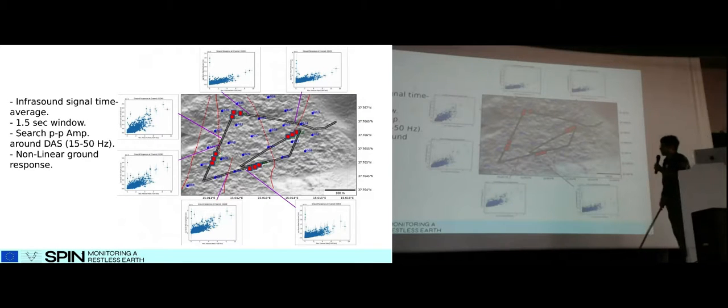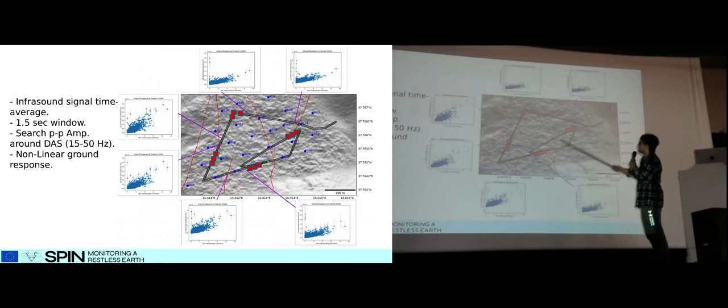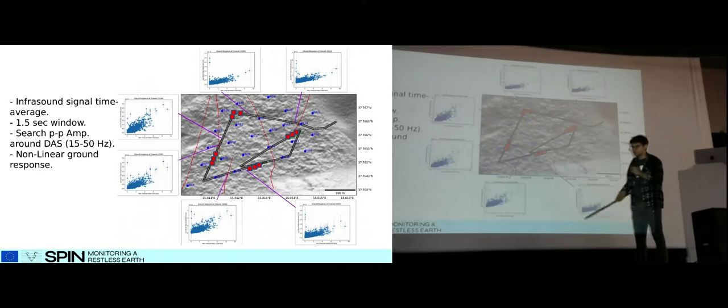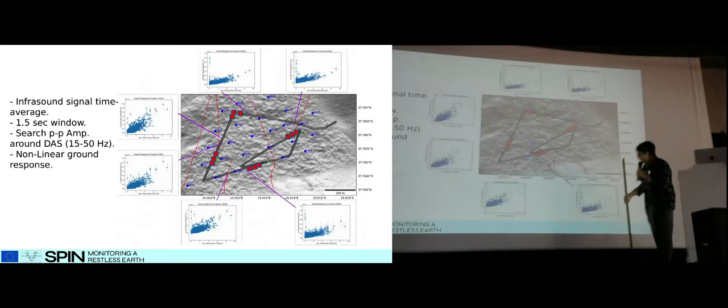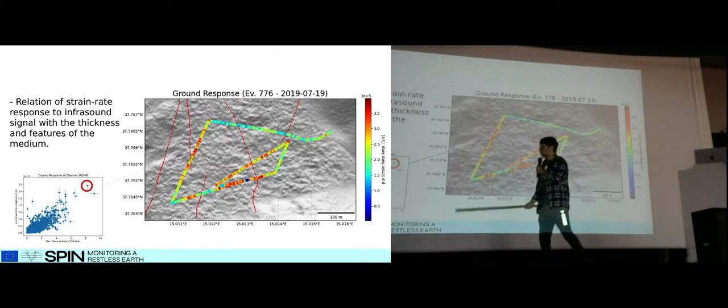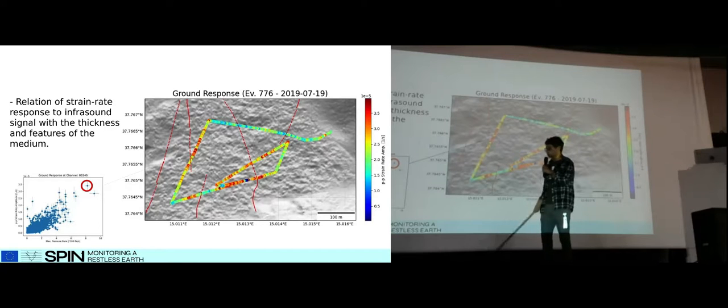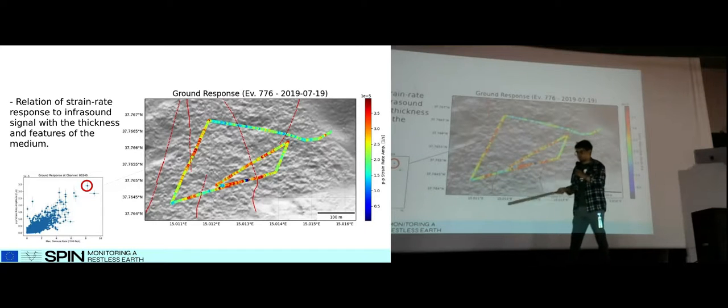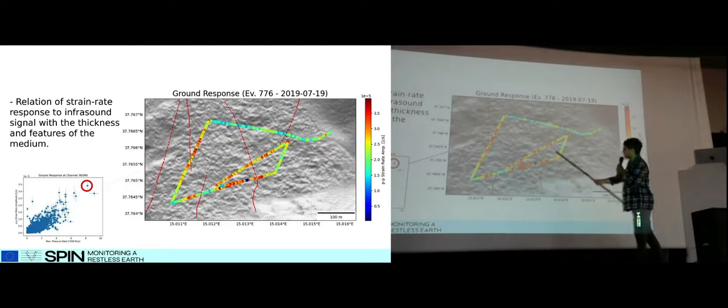We try to do the same for all the channels across the cable in order to see how this non-linearity behaves along the cable and how it is related to the structures. If we take one of the events in the part when we say there is a kind of non-linear behavior, and we also trace the same event towards the other channels of the cable, then what we see is something like this.